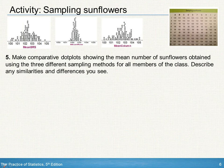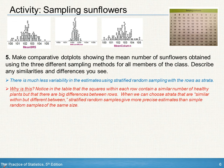When comparing the three dot plots, students will see that the spread is smaller for the stratified random sample with rows as the strata. This is because the squares within each row contain a similar number of healthy plants, but there is a big difference between rows. When we choose strata that are similar within but different between, stratified random samples give a more precise estimate than simple random samples of the same size.